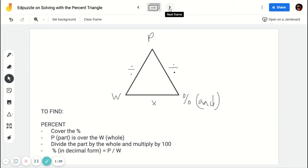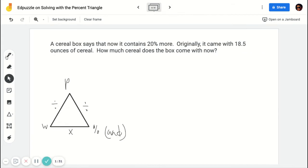Alright, so let's try out a couple of these. So we have this problem here. A cereal box says that it now contains 20% more. Originally, it came with 18.5 ounces of cereal. How much cereal does the box come with now? So when I'm looking at this problem, I need to realize what do they give me and what is missing. And then I can apply that to the triangle.